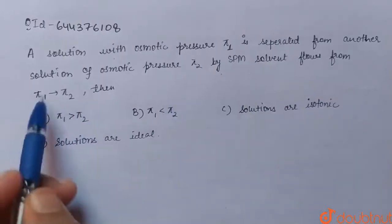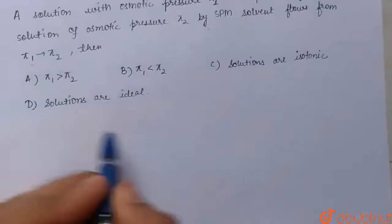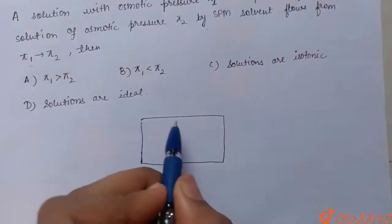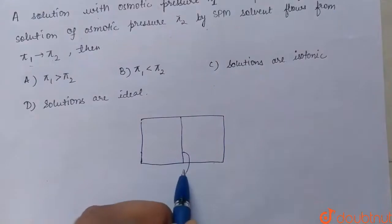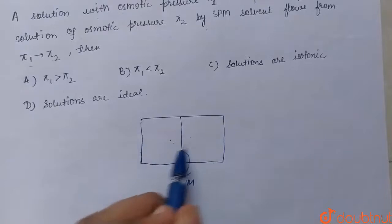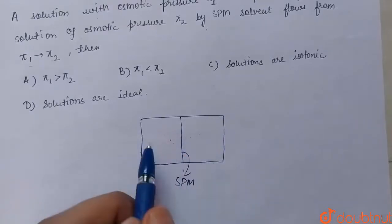We have a container like this, and this container is separated by SPM, which is a semi-permeable membrane that allows partial transfer of the substance. Here we have two tanks.